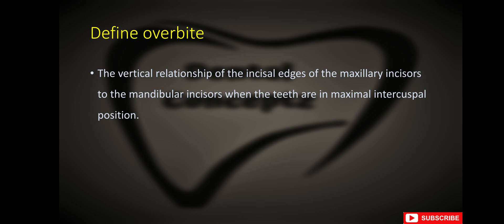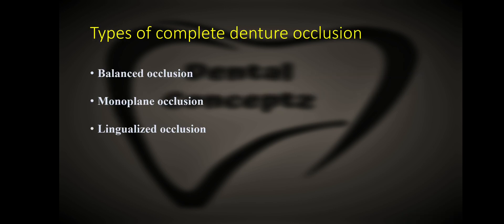What is overbite? Overbite is the vertical relationship of the incisal edges of the maxillary incisors to the mandibular incisors when the teeth are in maximal intercuspal position. What are the different occlusal schemes followed in a complete denture patient? There are three main occlusal schemes: balanced occlusion, monoplane occlusion, and lingualized occlusion.